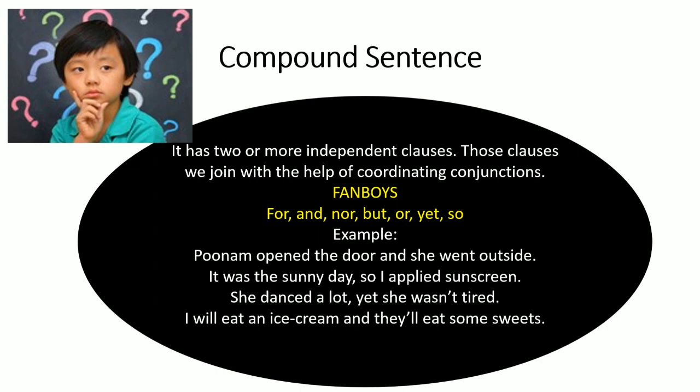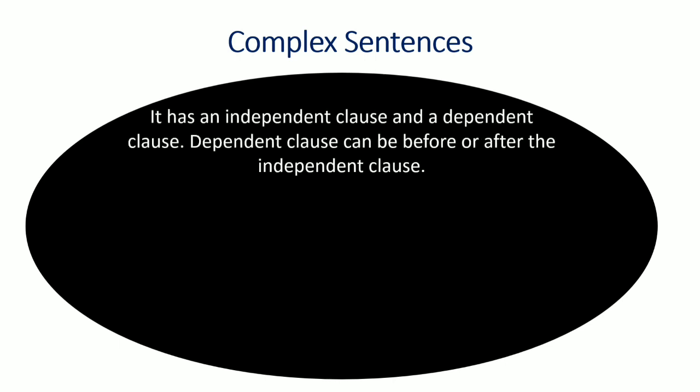Are you ready for another type of sentence that will help frame our sentences in a better way? It is a complex sentence. As the name suggests, it is a little bit complicated, but you can easily understand it if you know the rule. In complex sentences we have one independent clause and one dependent clause. The dependent clause can come before or after the independent clause.